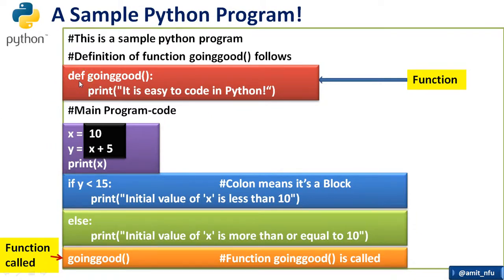Here is the definition of our function, going good is the name of the function, it is printing this line. We need in the main program to print this line, where? At the end. So we just write the name of the function followed by the braces and function is called. This is as simple as that.